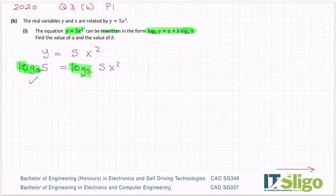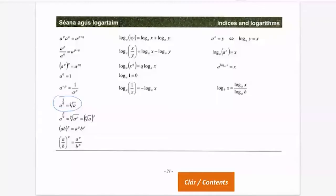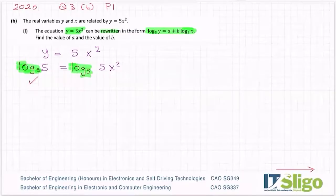And then how do I get this A? Well I see a product here. So couldn't I split that up into log to the base A of X plus log to the base A of Y? Because 5X squared is a product. 5 can be my X, the X squared can be my Y in this equation. So let's do that.